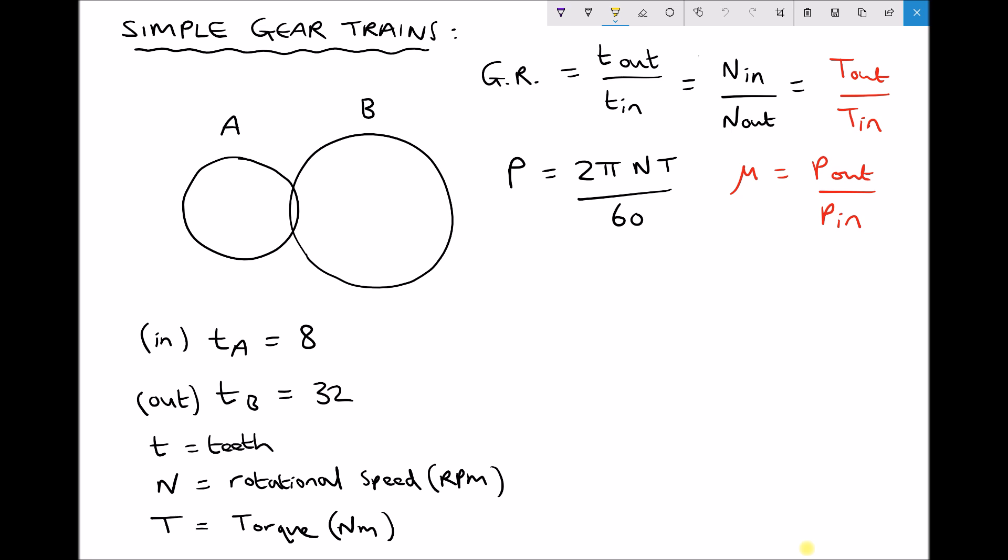Underneath the diagram we've specified how many teeth we have on gear A. There's 8 teeth on the smaller gear, and on the larger gear, gear B, we have 32 teeth.